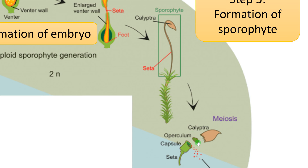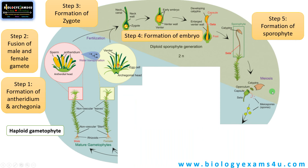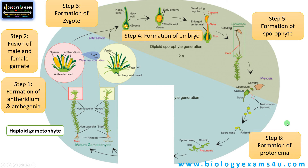On maturity, the operculum has specialized cells called the annulus — thin-walled cells that absorb water, open, and release the spores to the outside. Once the spore is formed, the sporophytic diploid phase is over. The gametophytic phase begins again. The spores germinate and form protonema — the filamentous structure formed by division of the spores. First it forms a rhizoid, then a bud with photosynthetic leaves. This is called protonema.